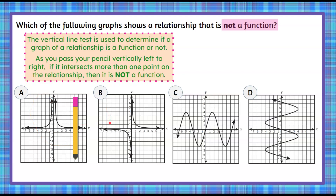Let's check choice B. We're going to pass our pencil left to right — one point on the graph, one point, one point, one point. It doesn't fail; it only ever passes through one point. So this is a function.